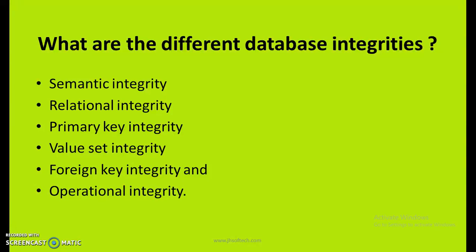What are the different database integrities? There are different types of database integrities: semantic integrity, relational integrity, primary key integrity, value set integrity, foreign key integrity, and operational integrity. These are the different types of integrities we have in the database.